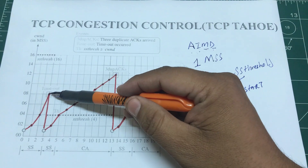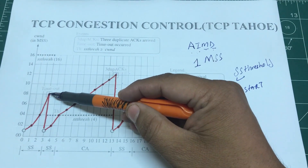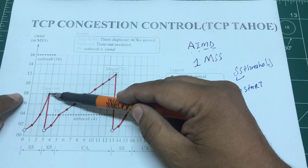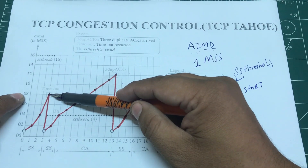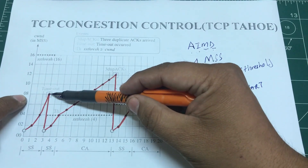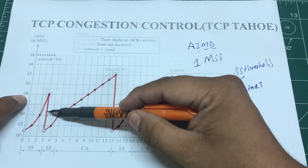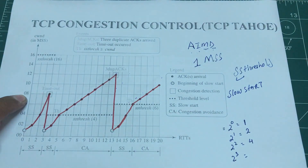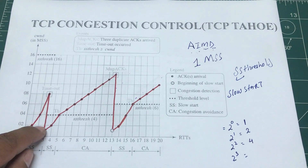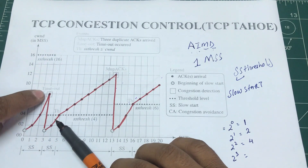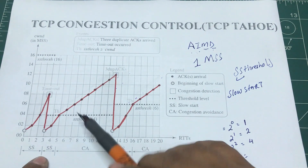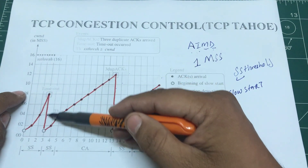Let's say timeout occurs when we've just sent eight packets. What do we do? We drop the threshold down. The last number of packets sent was eight, so we make the new threshold half of that — four. We take half of whatever the congestion window value was at the point of timeout, and that becomes our new ssthresh value.